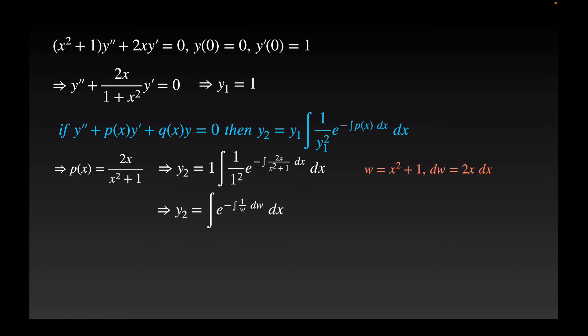That gives me the integral e to the negative integral 1 over w dw inside. And of course 1 squared is 1, so I just simplify those a little bit. Integral of 1 over w is natural log of w, w is x squared plus 1, so that's e to the negative natural log x squared plus 1 dx.